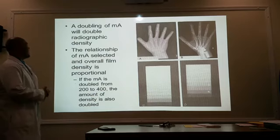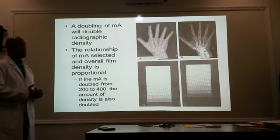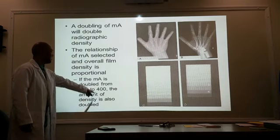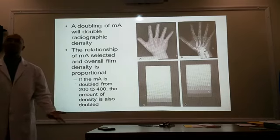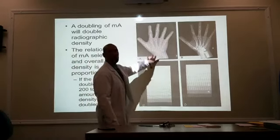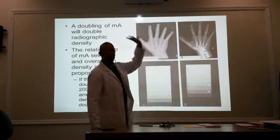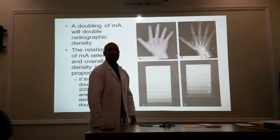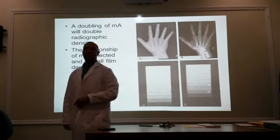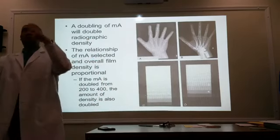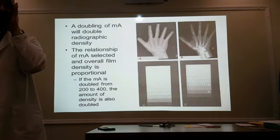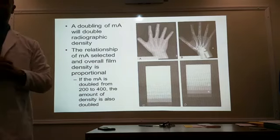The relationship between mAs selected and overall film density is proportional. If I started off with 200 and doubled it to 400, I'm also making it twice as dark. But you've got to be cautious when manipulating MA, or time, or mAs as one unit. Because when you're manipulating mAs, you're also manipulating patient exposure.